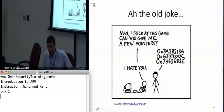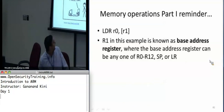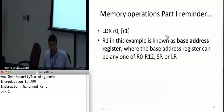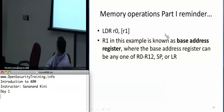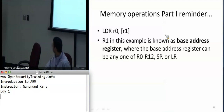We're going to be covering memory operations in more detail now. Last time we referred to something called the base address register, which is R1 from the LDR instruction — the one in square brackets. That's the register that has the actual address you want to operate on, so it's called the base address register. It can be any one of R0 through R12, the stack pointer, or the link register.